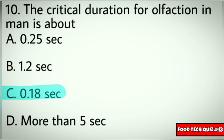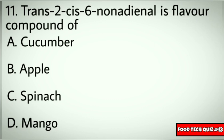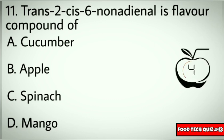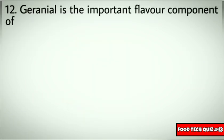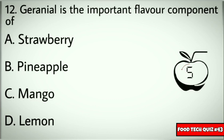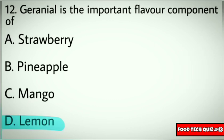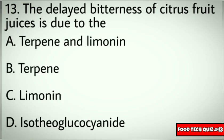Question number 11: Trans to cis-6 non-enal is the flavor compound of? Options: A) Cucumber, B) Apple, C) Spinach, D) Mango. Correct answer: A) Cucumber. Question number 12: Geraniol is the important flavor component of? Options: A) Strawberry, B) Pineapple, C) Mango, D) Lemon. Correct answer: D) Lemon.